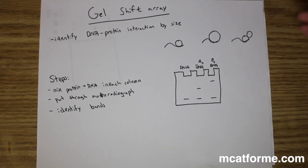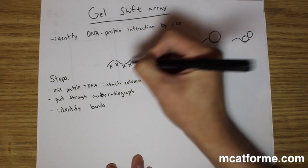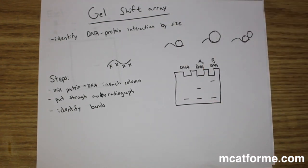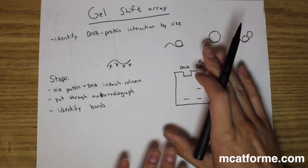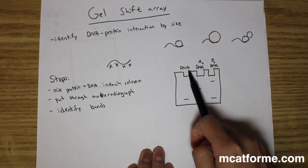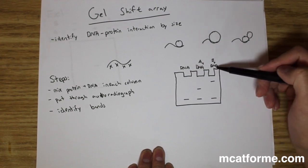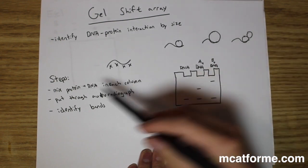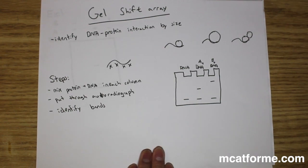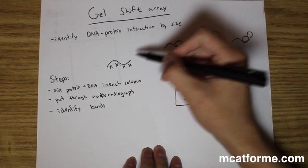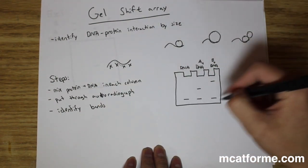The steps are: first, we're always looking at some type of labeled DNA — labeled usually with radiation but it can also be fluorescence. We mix these proteins and DNA in each column, so each column has a different reaction. The first column has just DNA, the second has DNA and protein A, and the third has DNA plus protein B. We then put this through an autoradiograph, which identifies exactly where the bands are because we labeled the DNA with radiation.